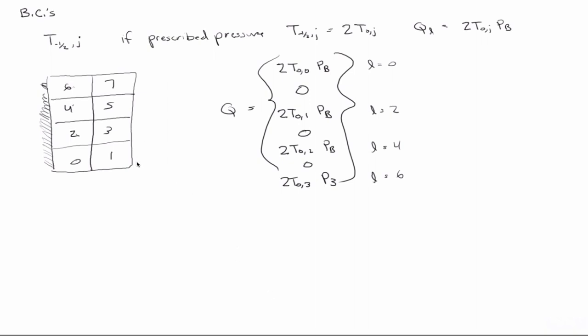Likewise, if there's no flow, no flux, then t, in this case it's nx minus 1 half j. So anything along this boundary here, if it's no flow, just like before, will be 0. So that's how you handle the boundary conditions.